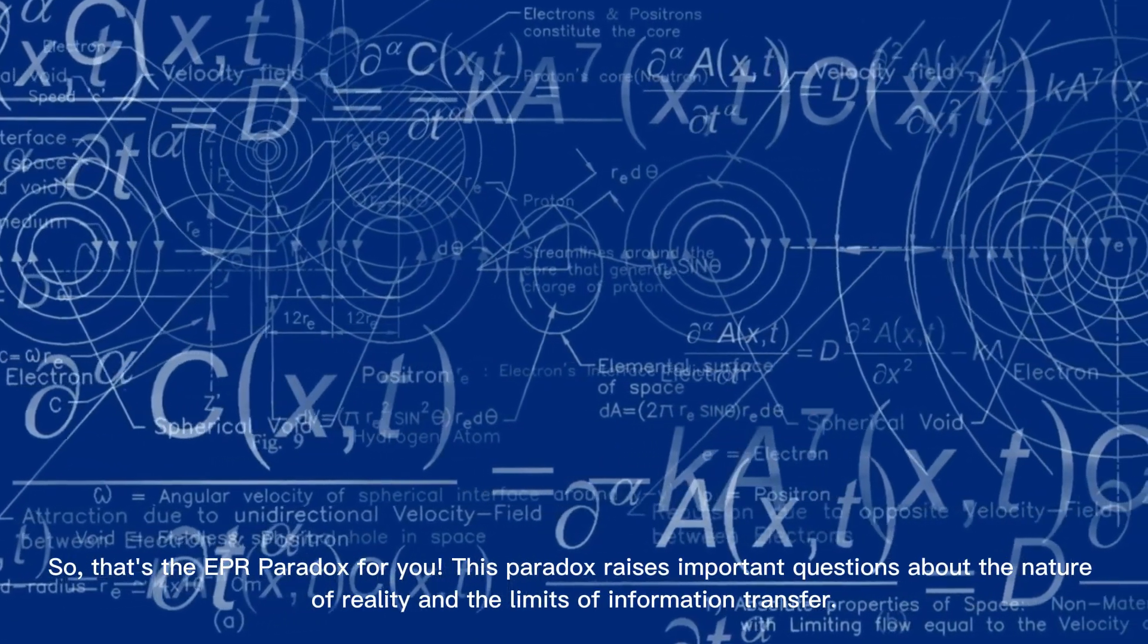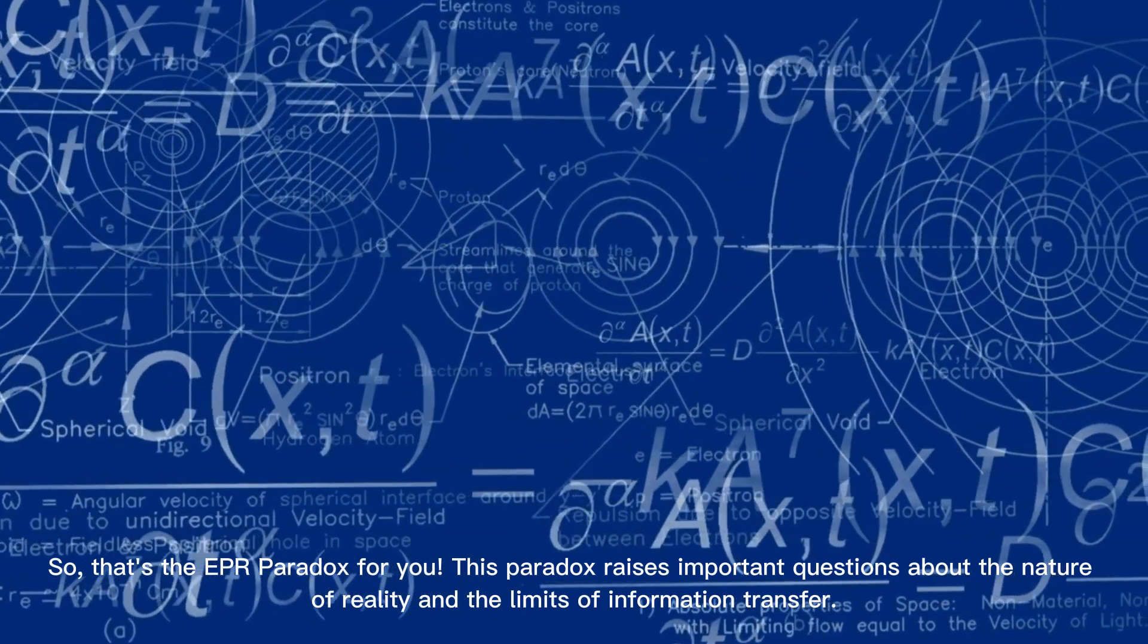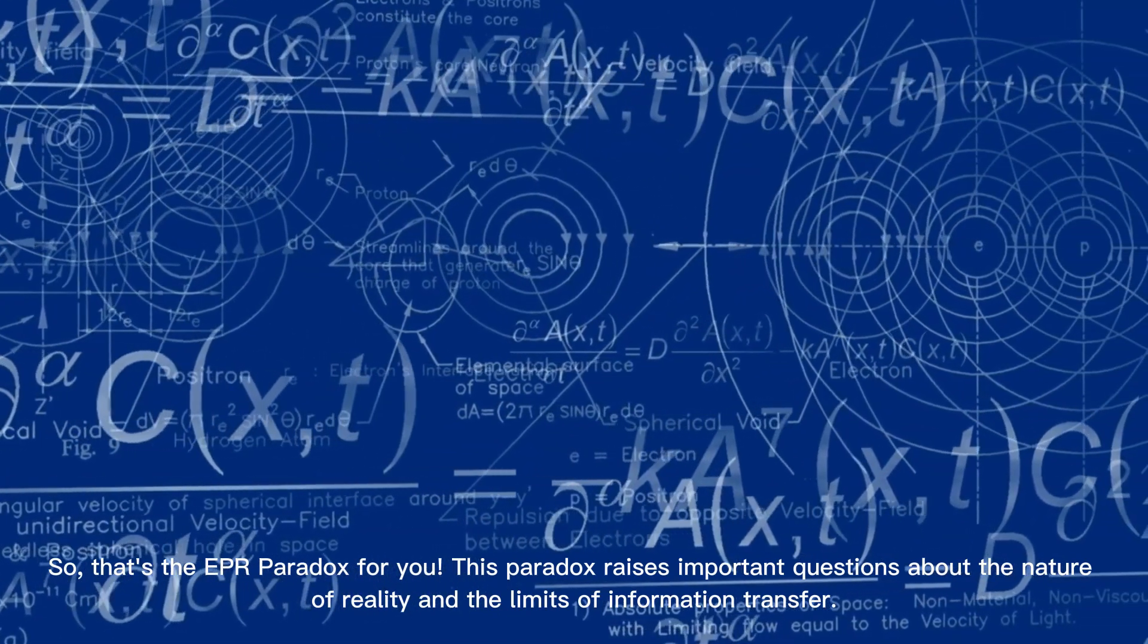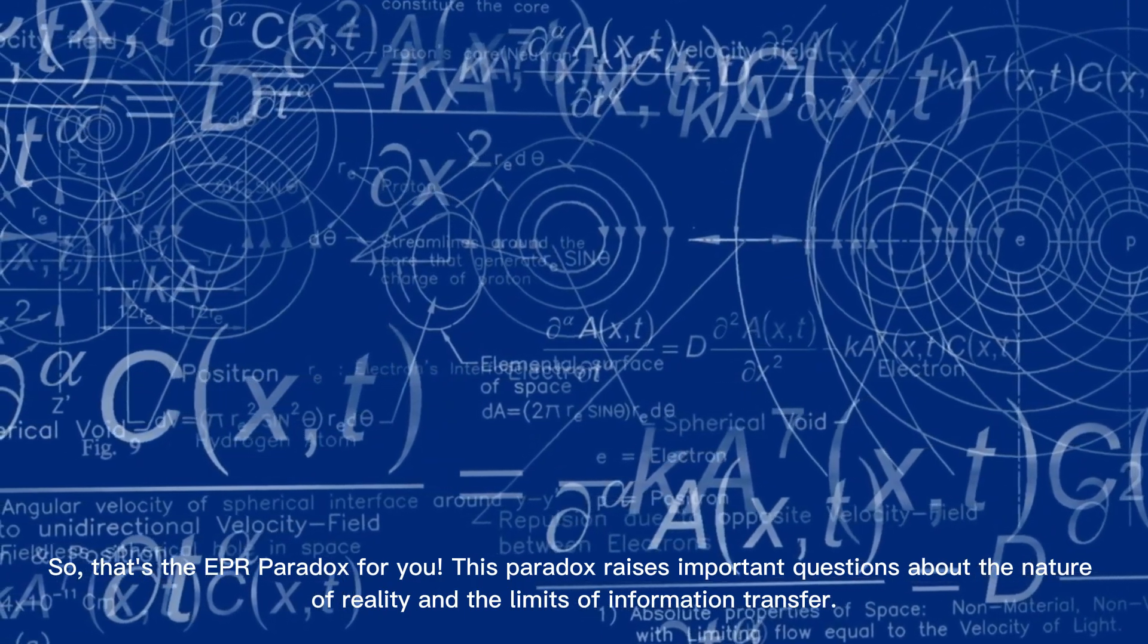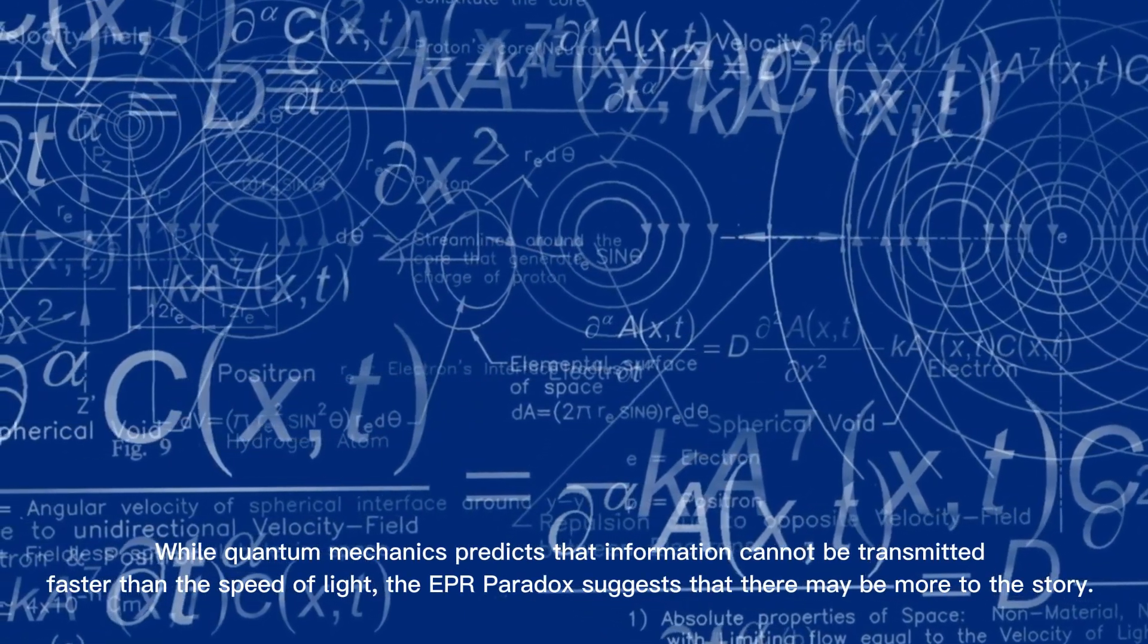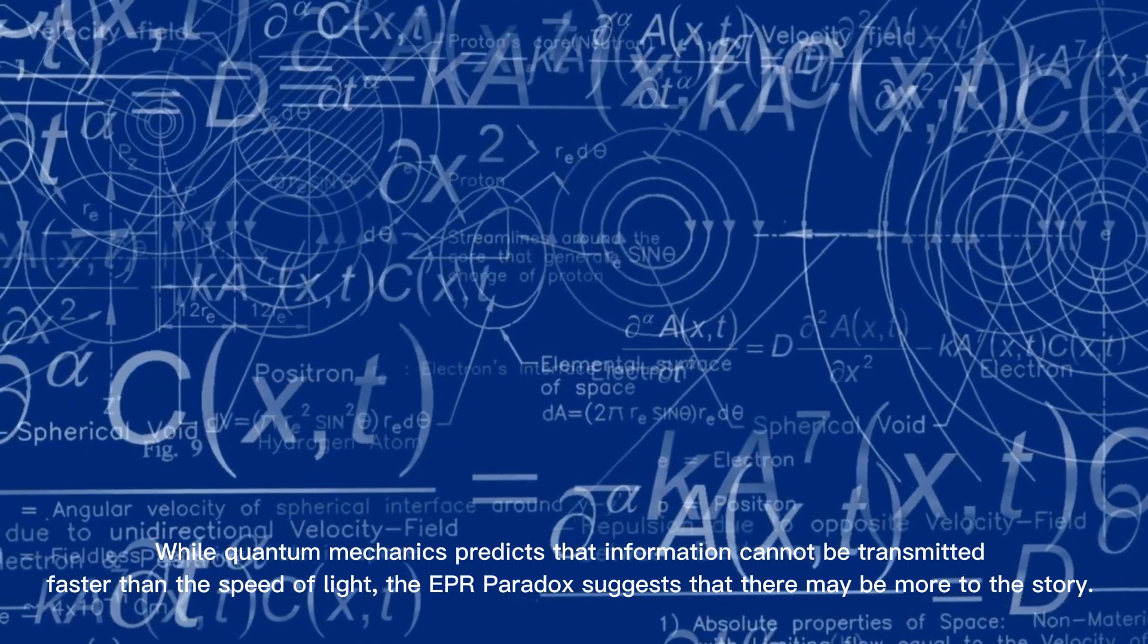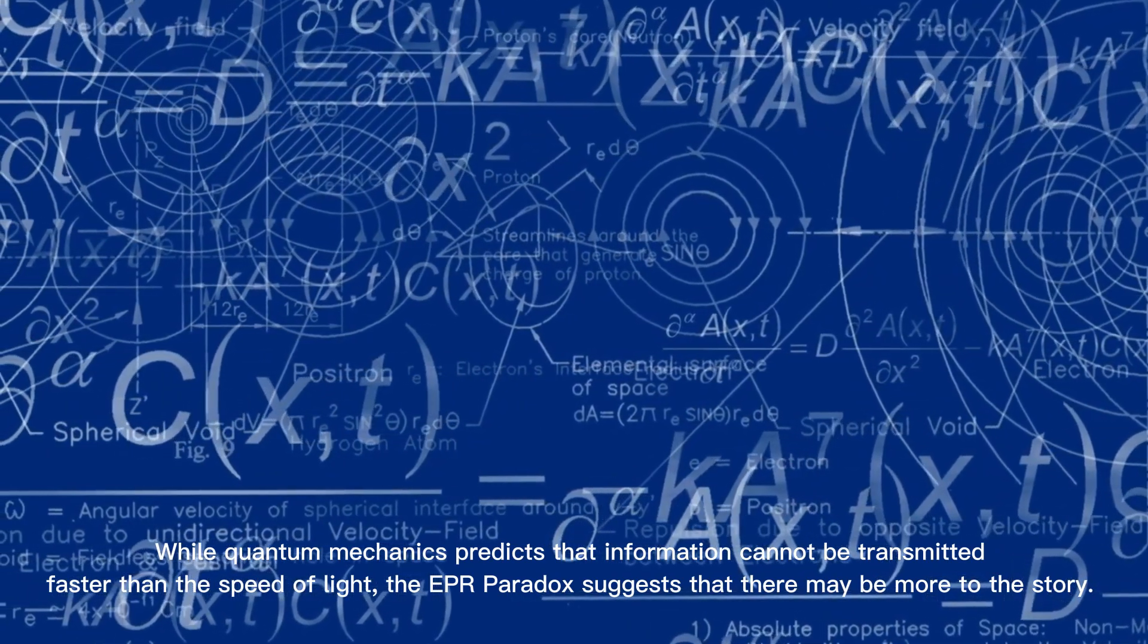So, that's the EPR paradox for you. This paradox raises important questions about the nature of reality and the limits of information transfer, while quantum mechanics predicts that information cannot be transmitted faster than the speed of light.